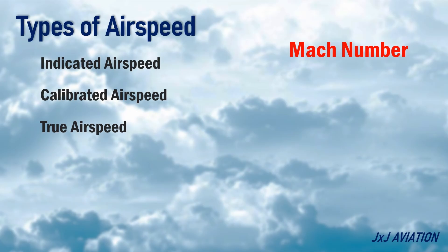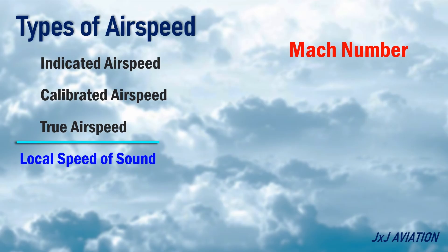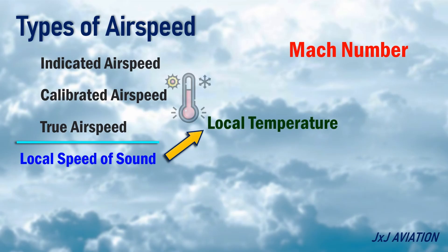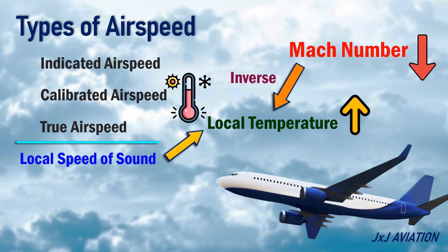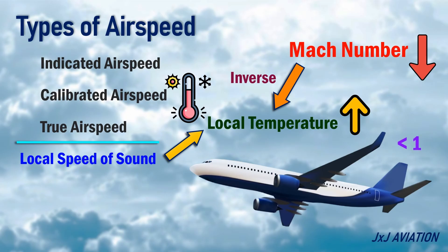Mach number. This number is the ratio between the true airspeed and the local speed of sound. The speed of sound is dependent on the local temperature, so the Mach number will be inversely proportional to temperature. For subsonic aircraft, the Mach number will be less than 1.